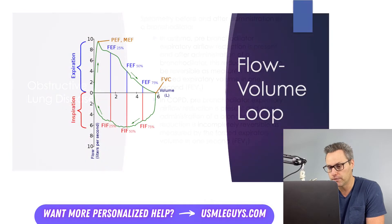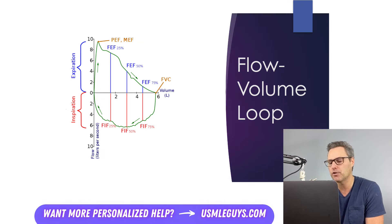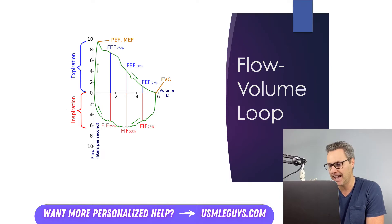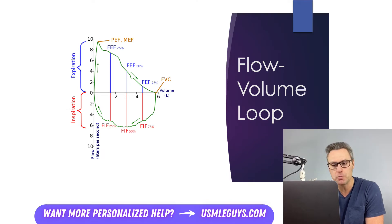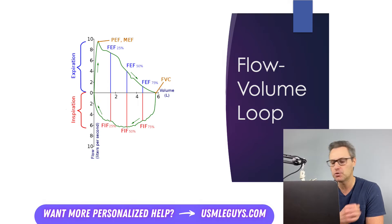This is also a review from your step one info. Remember that a flow volume loop is a great way to view inspiratory and expiratory flow and visualize the difference between restrictive and obstructive lung diseases. Expiratory and inspiratory flow are plotted on the y-axis with expiration above the x-axis and inspiration below the x-axis, and the x-axis is a measure of volume in liters. This loop represents one performance of a maximal forced expiration and inspiration. While we already went over the value of the FEV1 to FVC ratio, a flow volume loop will provide additional utility by helping us localize the specific airway constriction.